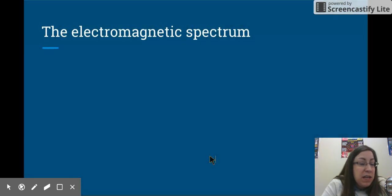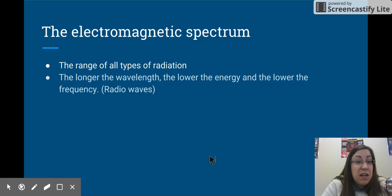So, this is the part that I need you to write down, so you should start writing these notes down. The electromagnetic spectrum is the range of all types of radiation. And the longer the wavelength, the lower the energy, and the lower the frequency. We learned about this already when we were talking about energy. An example of this would be radio waves.